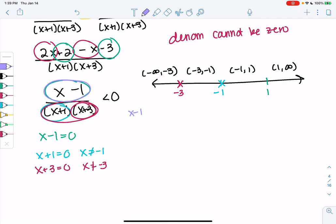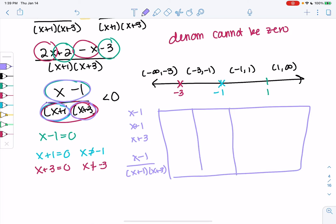We're going to plug into each factor: x minus 1, x plus 1, x plus 3. And then we'll combine them to figure out the positive and negative signs. So I'm going to make a nice little table. We should have 4 columns for 4 intervals.